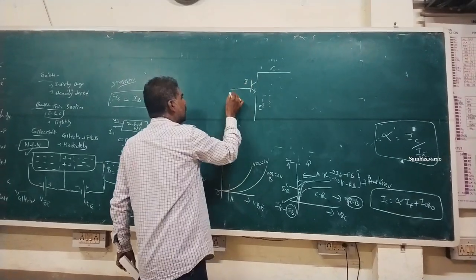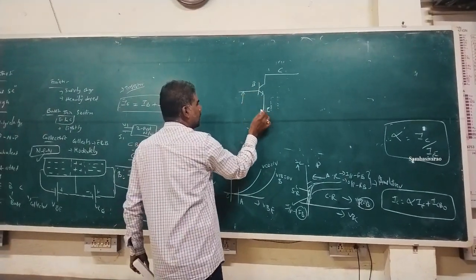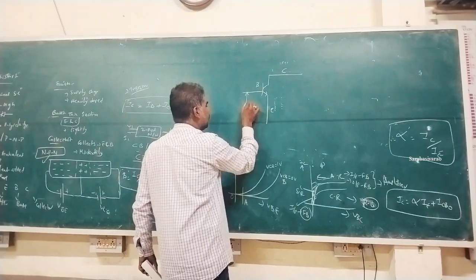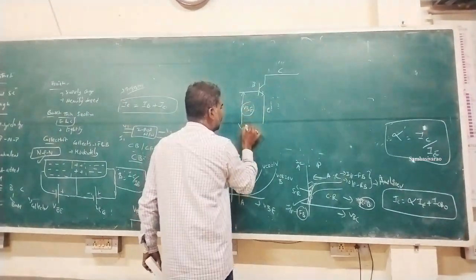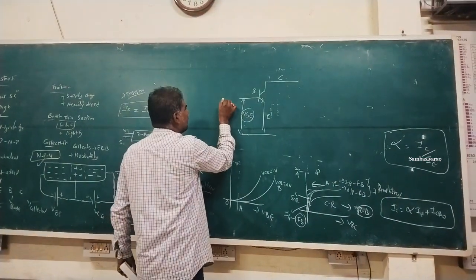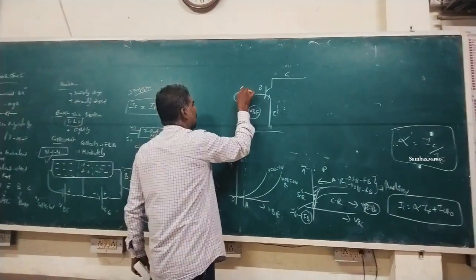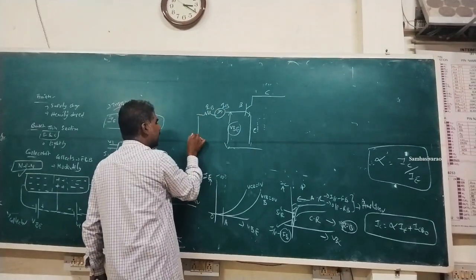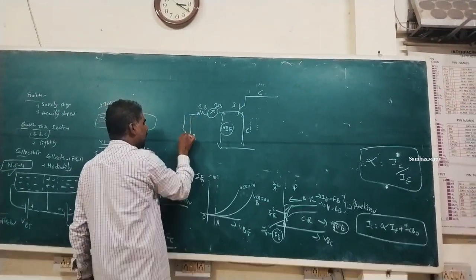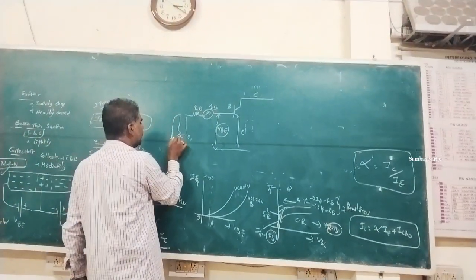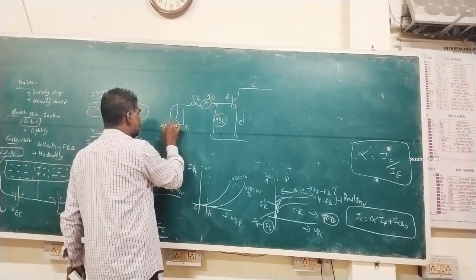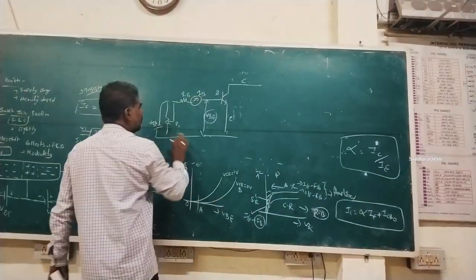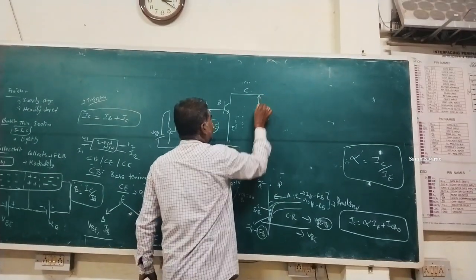The circuit has a collector terminal and a base terminal. The base-emitter voltage VBE is measured, and base current IB is measured and limited by resistor RB. A potentiometer P1 is used, and supply voltage VBB (base voltage) is applied.